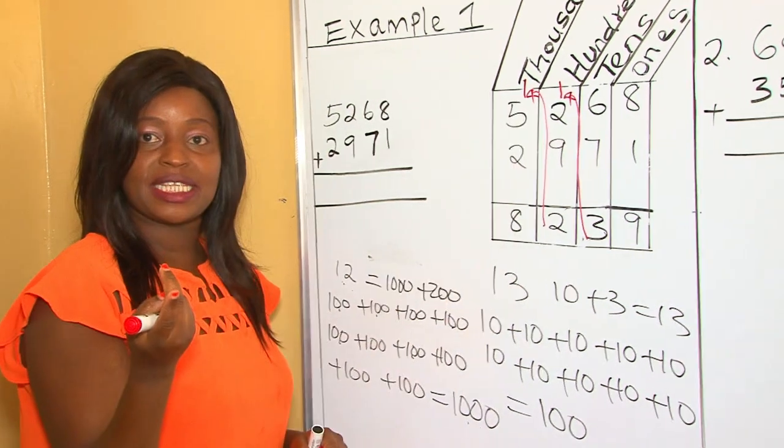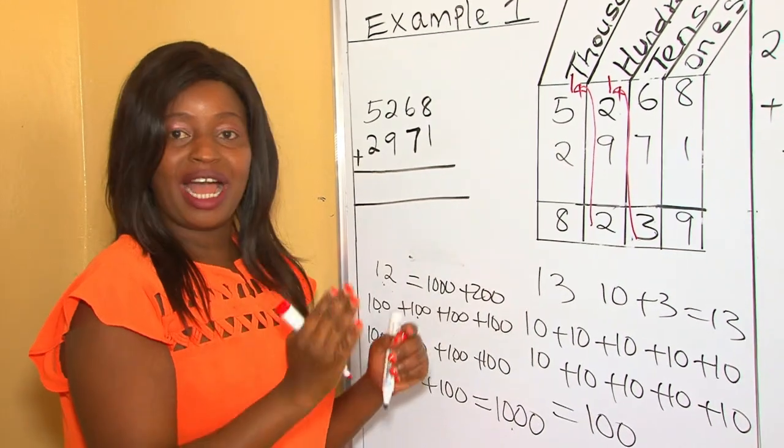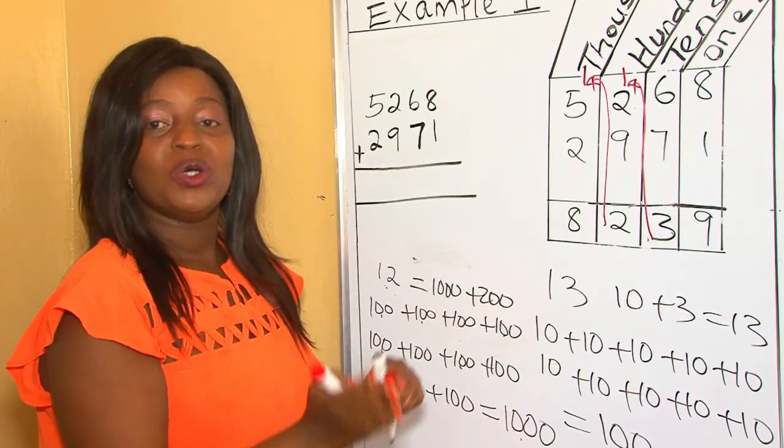We have regrouped twice. That is, from tens to hundreds, and from hundreds to thousands.